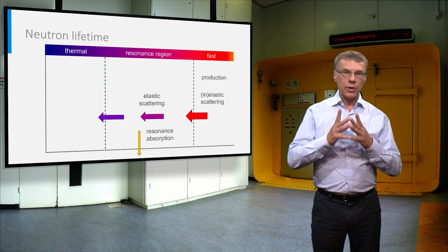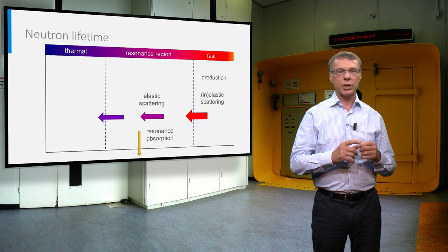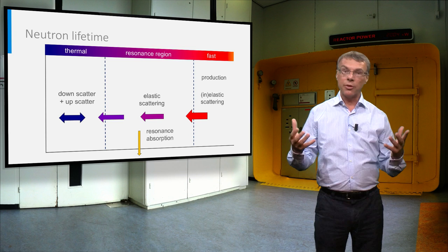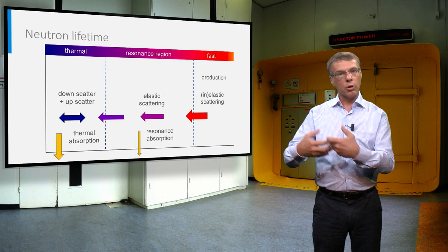When the neutron survives the resonance range, it will reach the thermal energy range, and this range is very special, because the moderator atoms have an energy comparable to that of the neutrons, which means a neutron can also gain energy in a collision. But eventually, all thermal neutrons will be lost via absorption in the reactor core or via leakage out of the core.